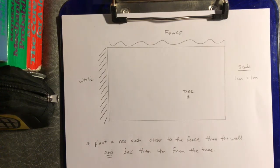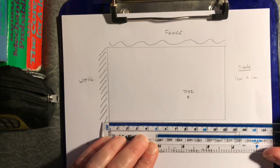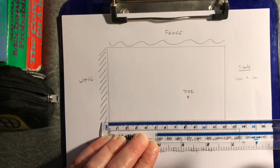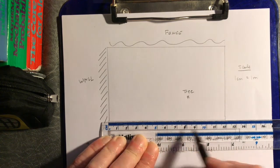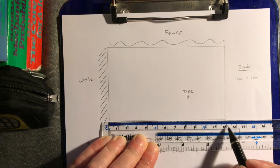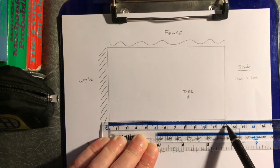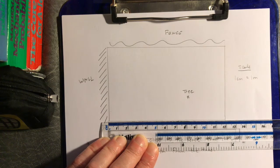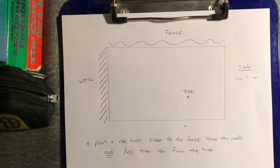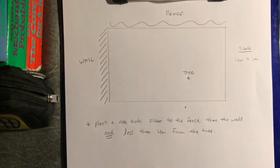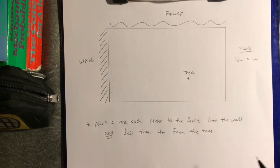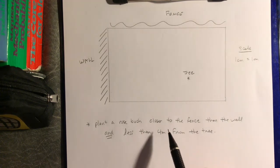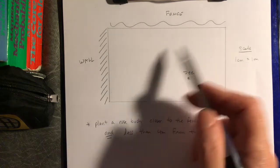So that means the bottom of my garden reads 12 on my ruler — 12 centimeters on the picture — so that's 12 meters in real life. And I want to plant a rosebush. Roses are nice, let's plant a rosebush. I want to figure out where to put it.